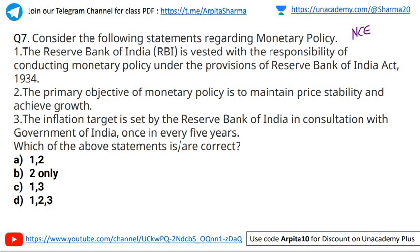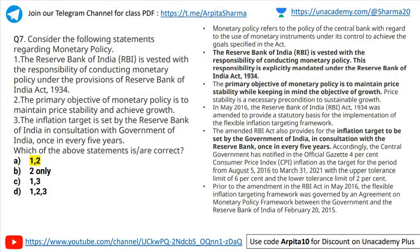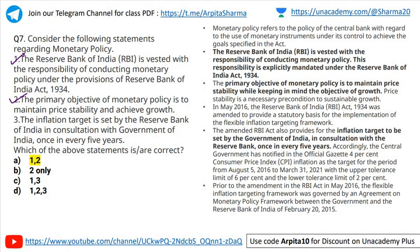Question number seven — a direct question from NCRT class 12th Indian economy: The Reserve Bank of India is vested with the responsibility of conducting monetary policy under provisions of RBI Act 1934; the primary objective of monetary policy is to maintain price stability and achieve growth; inflation target is set by RBI in consultation with government of India once every five years. The correct answer is A — statements one and two are correct. The inflation target is not set by RBI; it is set by the Government of India in consultation with RBI, so statement three is wrong.